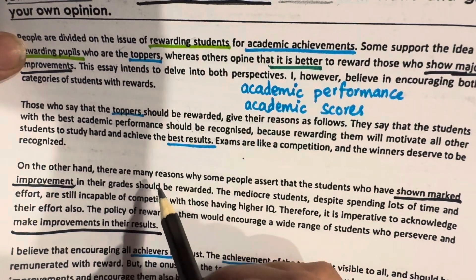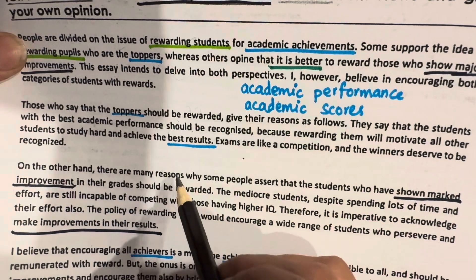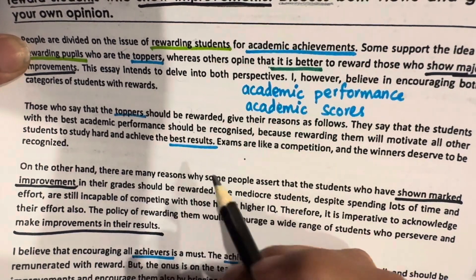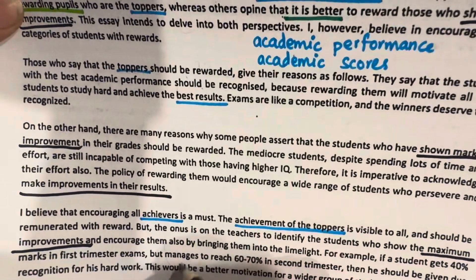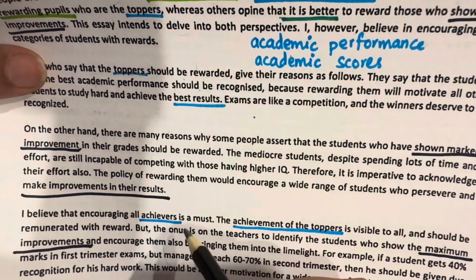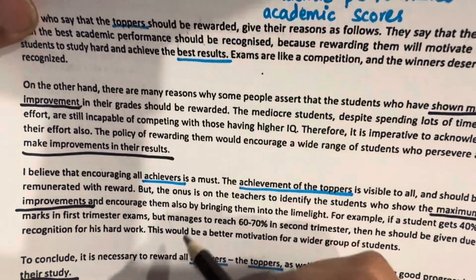Then the second body paragraph covers the other side — the benefits of rewarding those who show progress. And then the third body paragraph is about our own opinion, followed by the conclusion.